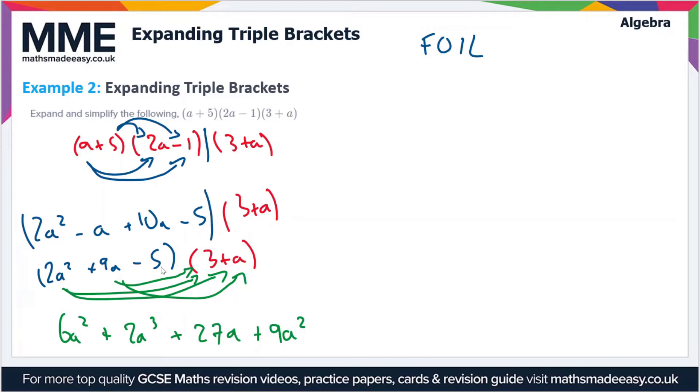9a × a = +9a². Now the -5 terms: -5 × 3 = -15, and -5 × a = -5a.